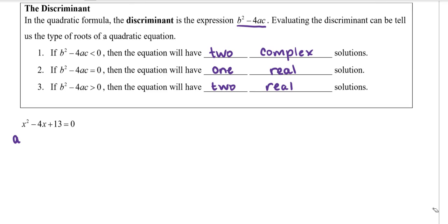So a, the coefficient of the x squared term is 1, b, the coefficient of the x term, the linear term, is negative 4, and c, the constant term, is 13.